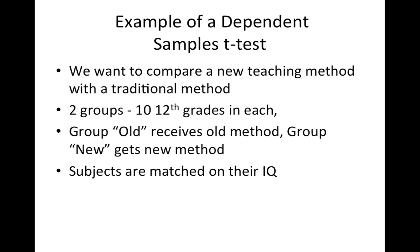So let's go through an example. We want to compare a new teaching method with a traditional method. We collect two groups of 10 12th graders. One receives the old method, one receives the new. And we match them on the basis of their IQ. What that means is we take the two kids with the highest IQ, and one of them we assign to group old, one of them we assign to group new. Then we take the next two kids with the highest IQs, one gets randomly assigned to one group, one to the other, and so on and so forth with all 10 pairs.